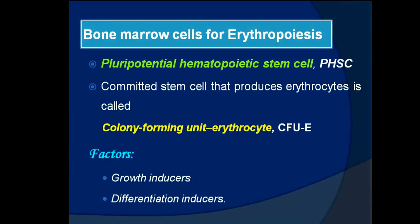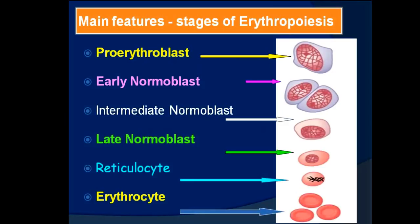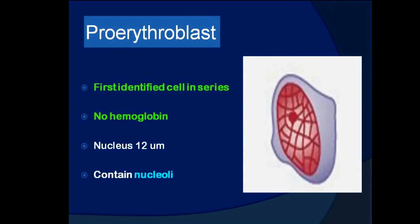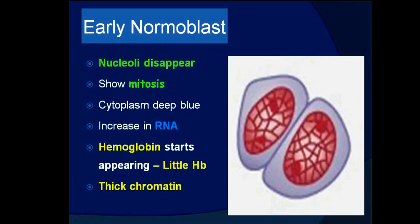The main stages of erythropoiesis are: pro-erythroblast, early normoblast, intermediate normoblast, late normoblast, reticulocyte, and erythrocyte. The pro-erythroblast is the first identified cell in the series. It has no hemoglobin, the nucleus is about 12 micrometers, and it contains nucleoli.